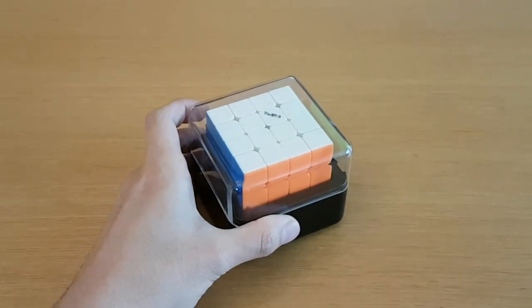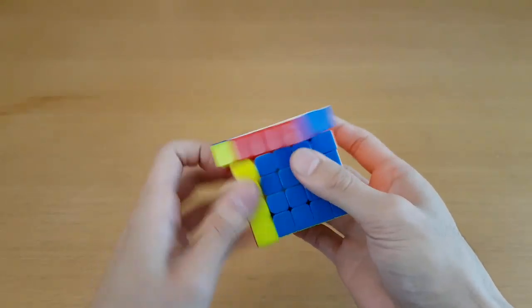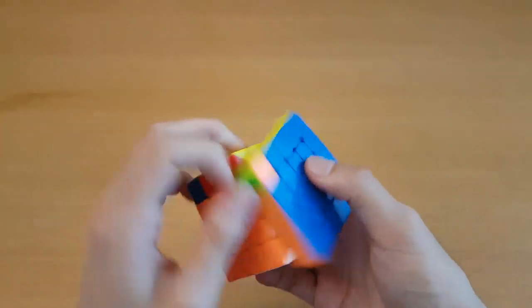Let's head over to the Valk 5. So the turning feels a lot like the Valk 4 and kind of like the Valk Power and the X-Man Shadow, but like a really fast version of the X-Man Shadow.